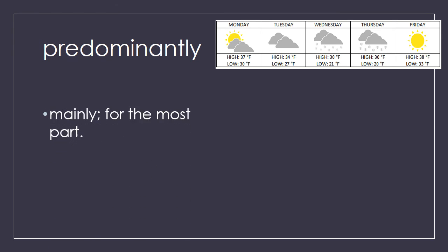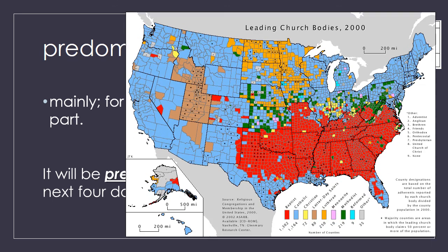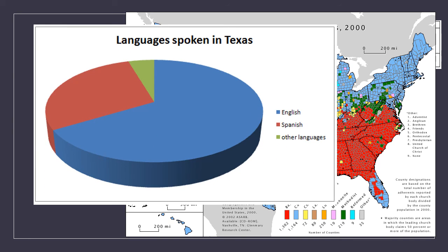We have the word predominantly. Predominantly means mainly, for the most part. Looking at a map of leading church bodies from 2000, you can see predominantly in the south people's Christian beliefs would be of the Baptist denomination, while the New England states like Maine, New York, and Massachusetts are predominantly Catholic. Here's the languages spoken in Texas — you can see that the predominant language is English with Spanish right behind.